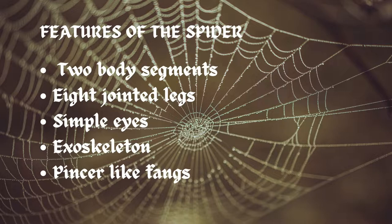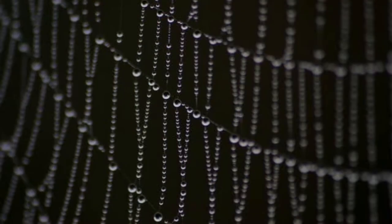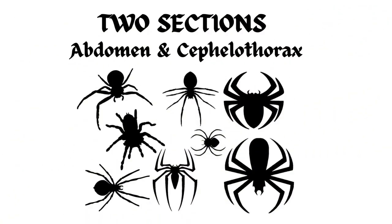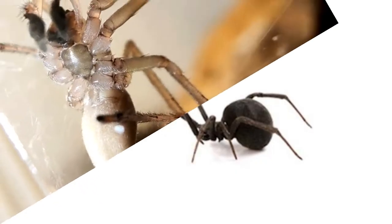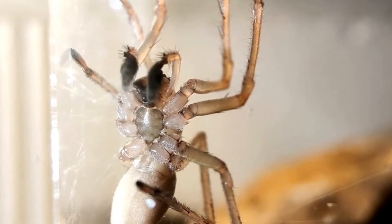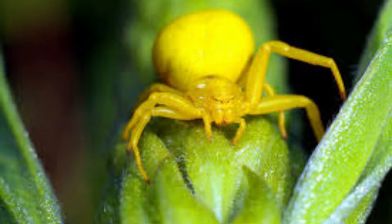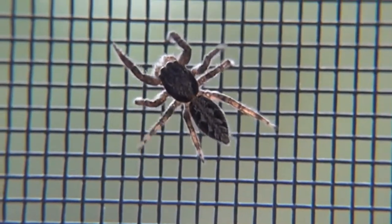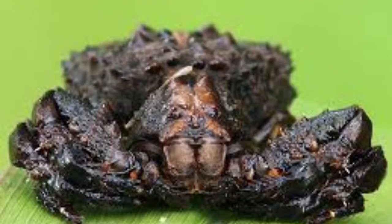Let's examine the physical features of the spider. There are two segments for the body, eight jointed legs, simple eyes, an exoskeleton, and pincer-like fangs. Let's use these physical features as a framework for the fantasy creature. The first order of business is to decide on the two body sections — the abdomen and the cephalothorax. Now will the creature be small and venomous? Will it be a large hunting spider or bird-eater? Will it be yellow and pale, allowing one to see the internal pulsating organs? In The Sarkhan Legacy, the spider has to grow big enough to battle humans, so the body segments will have to be large.